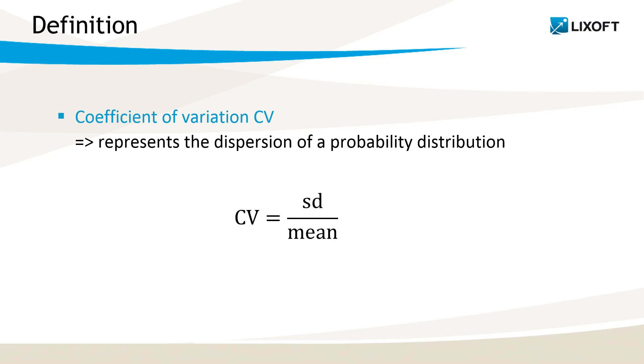If the coefficient of variation of a log-normally distributed clearance is 30%, for instance, then it means that there is a 30% inter-individual variability. The coefficient of variation is a quite common value to report, in particular for log-normally distributed parameters.